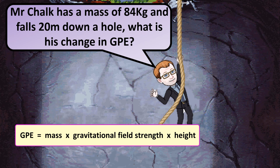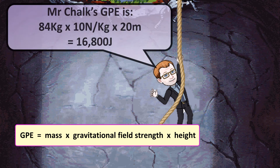If I fall down a 20-meter hole, what would be my change in GPE? That's just going to be 84 times 10 times 20, which gives 16,800 joules.